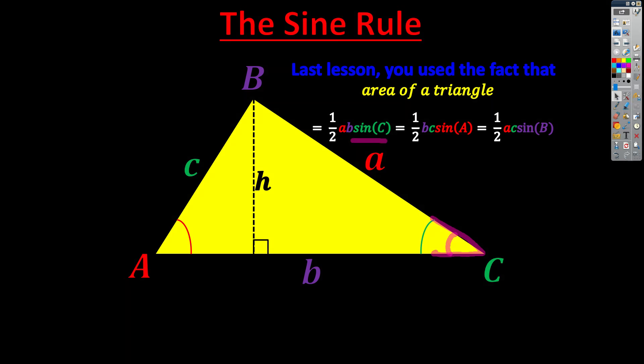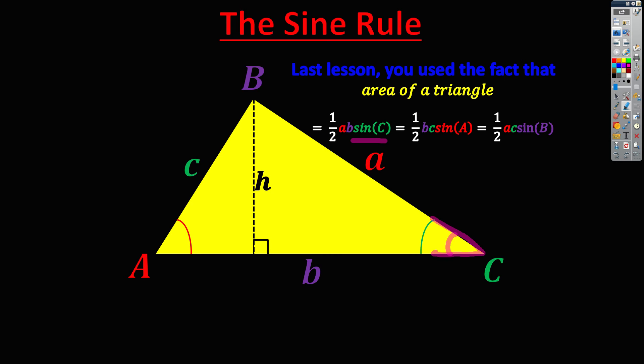You can also have a half BC sine A. That's going to be the SAS given on the left side. And then thirdly, you can have a half AC sine B, which is the angle sandwich given at the top. So that's going to be given in green.